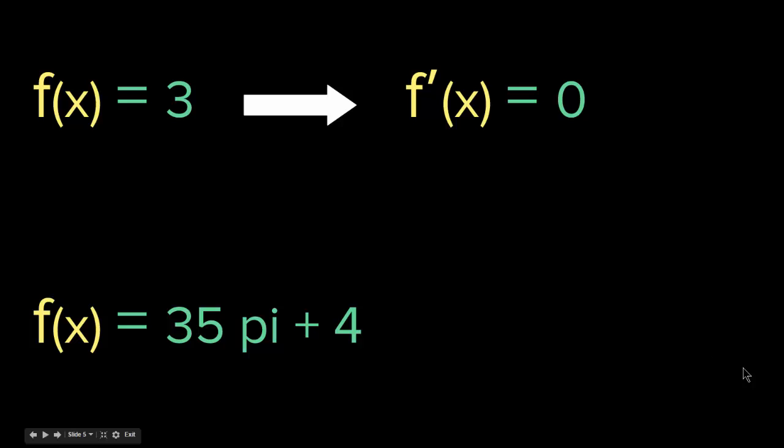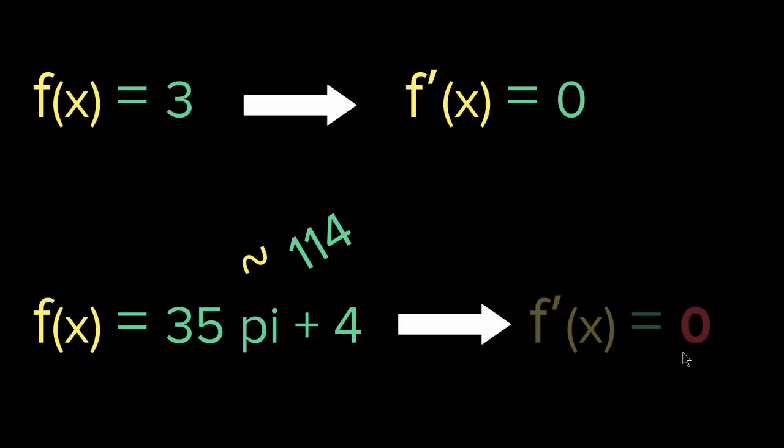Let me give you another example. Let's say f of x equals 35 pi plus four. You see here we have a pi, but still we have numbers. 35 pi plus four equals roughly around 114, and this is still a number. The derivative of this function is still zero because we have a constant.